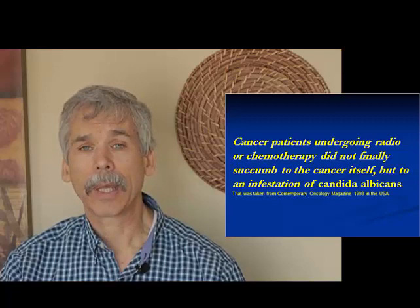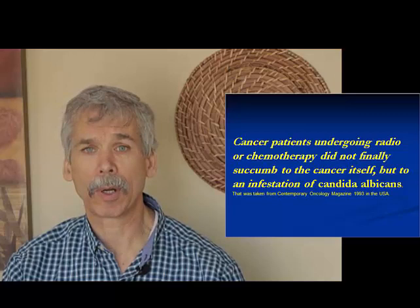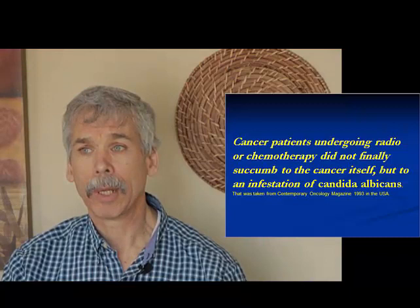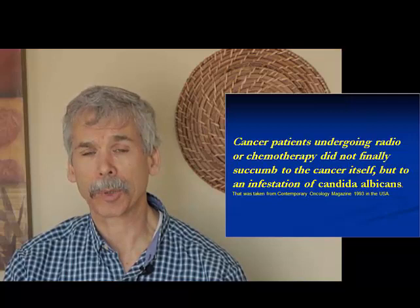When we think about what we covered earlier, Candida has four different forms. The filamentous forms are three of those — mold, fungus, and fungal parasite. Once Candida hits the fungal form, it produces chitin, and chitin is impervious to our immune system, so the immune system can't touch it.